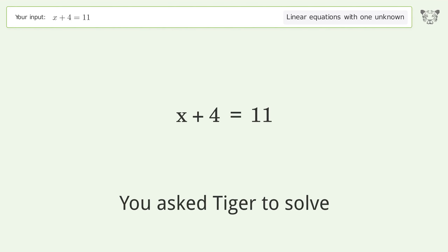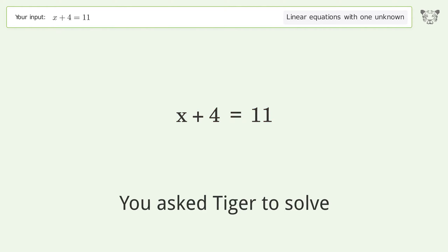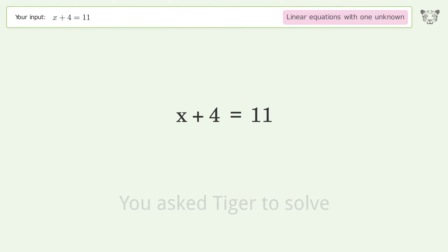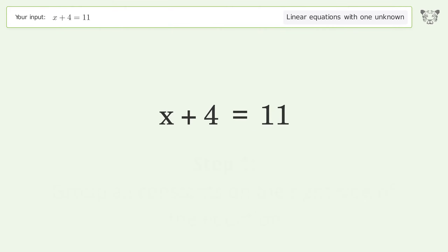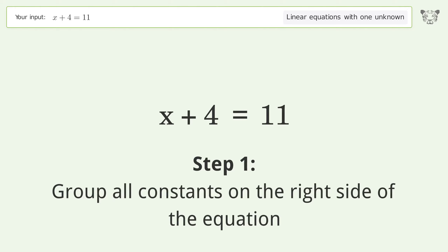Tiger solves this deal with linear equations with one unknown. The final result is x equals 7. Let's solve it step by step — group all constants on the right side of the equation.